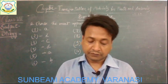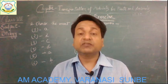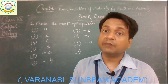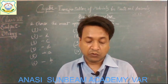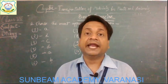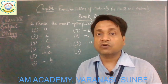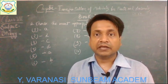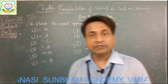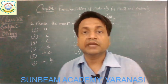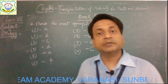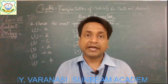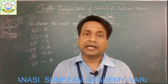Question number ten: Which of the following are the tiny filtering units of the kidneys? The kidneys are made up of thousands of small filtering units. Options are ureters, urethra, nephrons, and bladder. The name of those units is nephrons, so the correct answer is C. These all are the multiple choice questions with correct answers.